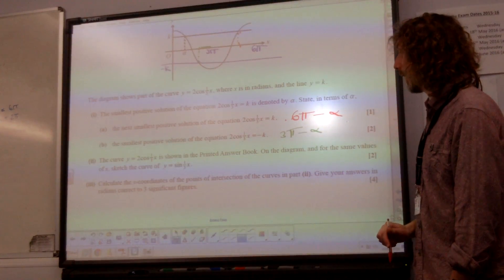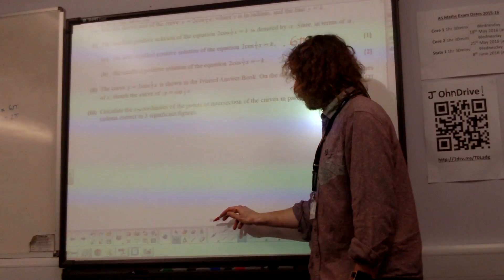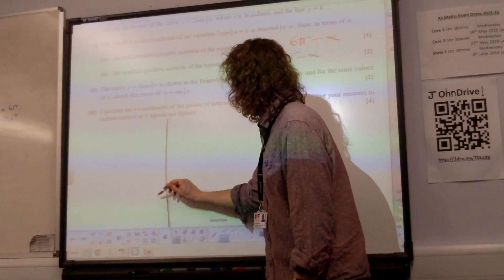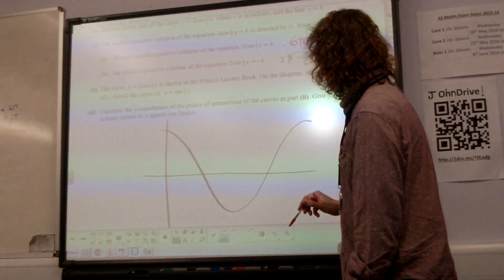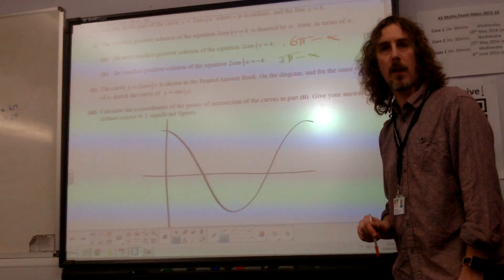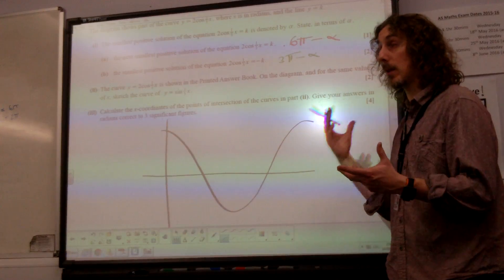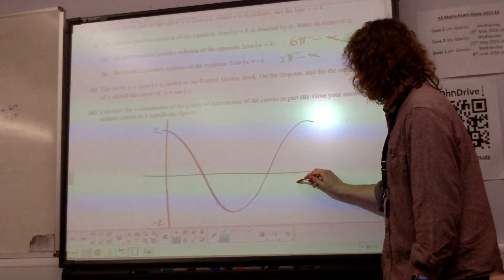The curve is shown in the printed answer book. Sketch the curve sine a third x. So you were given a graph that did that. That was what was drawn in your printed answer booklet. So now, what we've already worked out is that this is at 2, this is minus 2, this is 6 pi over here, isn't it?